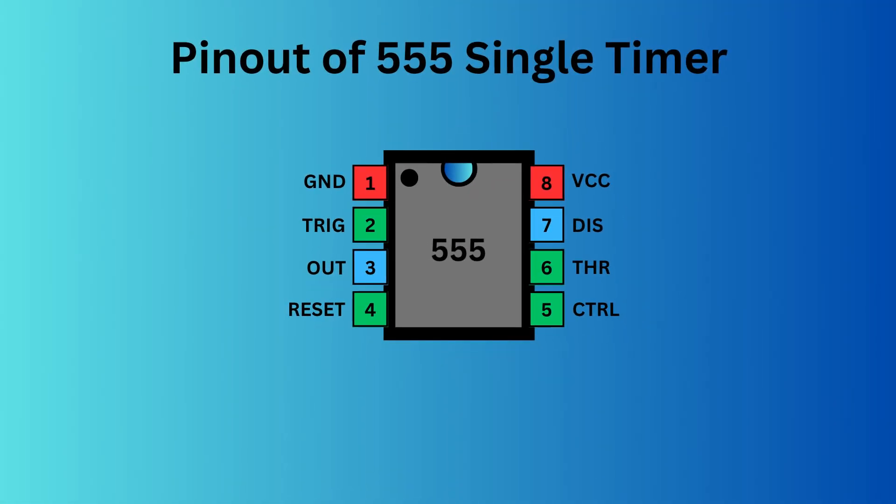The 555 timer IC comes with eight pins. There is a notch or a dot on the chip's body. Pin one, located at the top left, serves as the ground or ground supply. Pin two, the trigger pin, initiates the timing interval in monostable and astable modes. Pin three serves as the output, providing the timer's operational result depending on its mode.